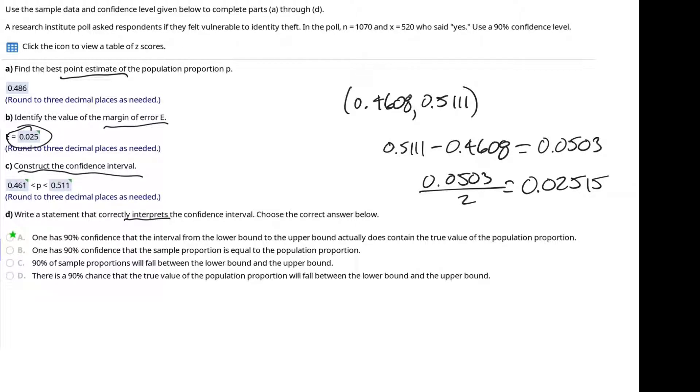Rounding the confidence interval endpoints to three decimal places would give us 0.461 to 0.511.